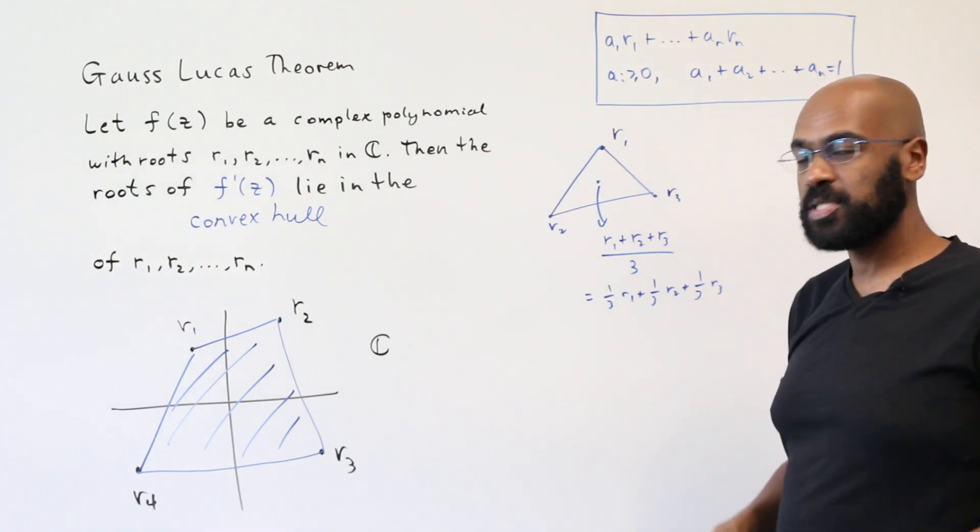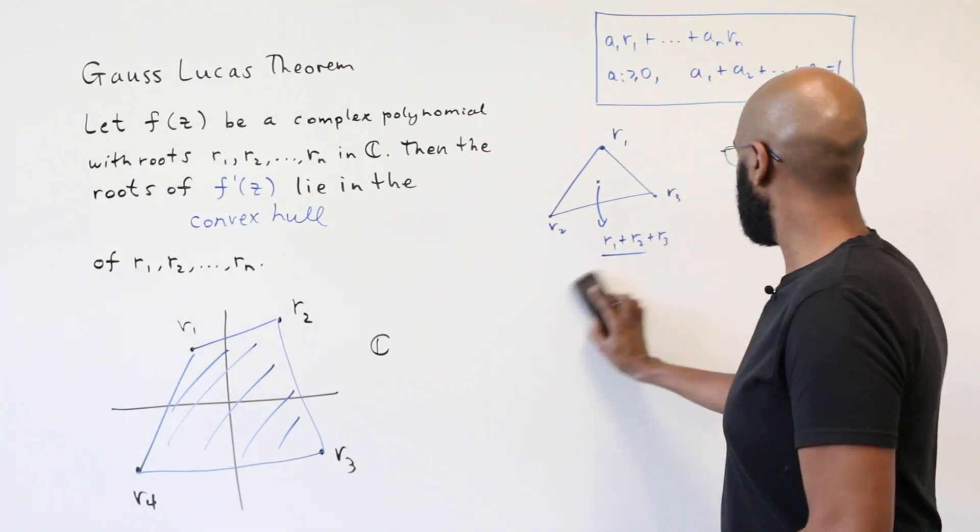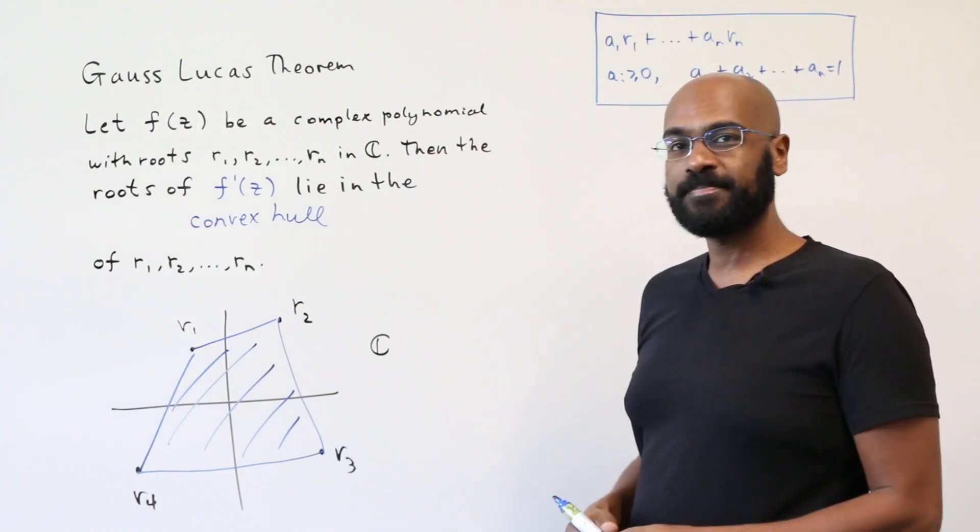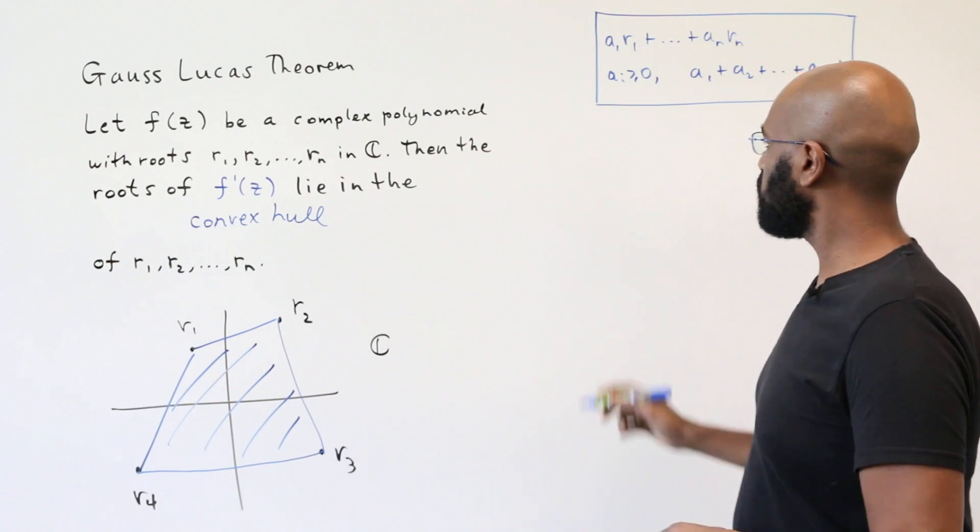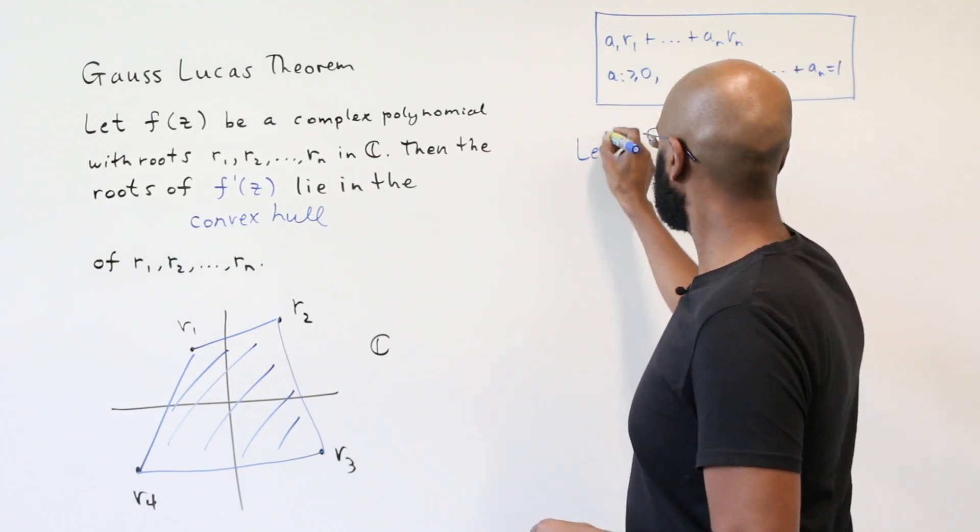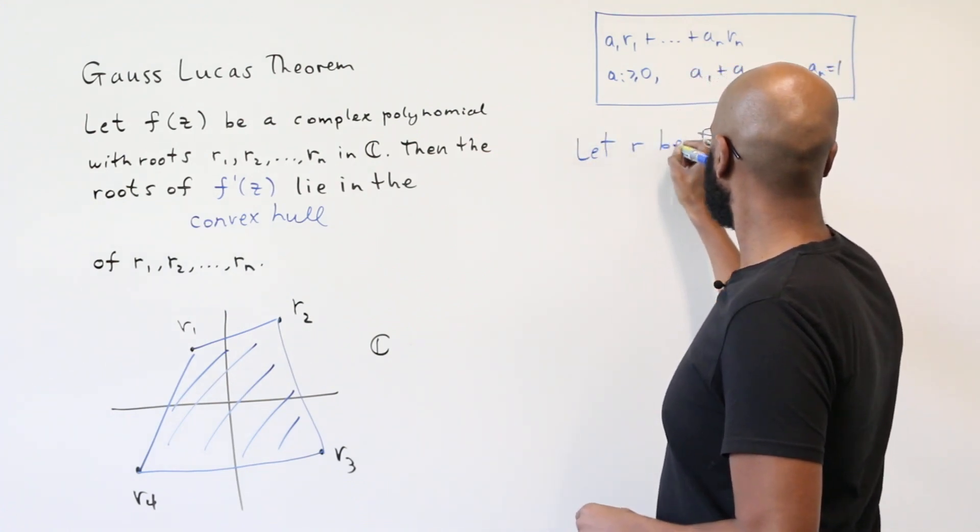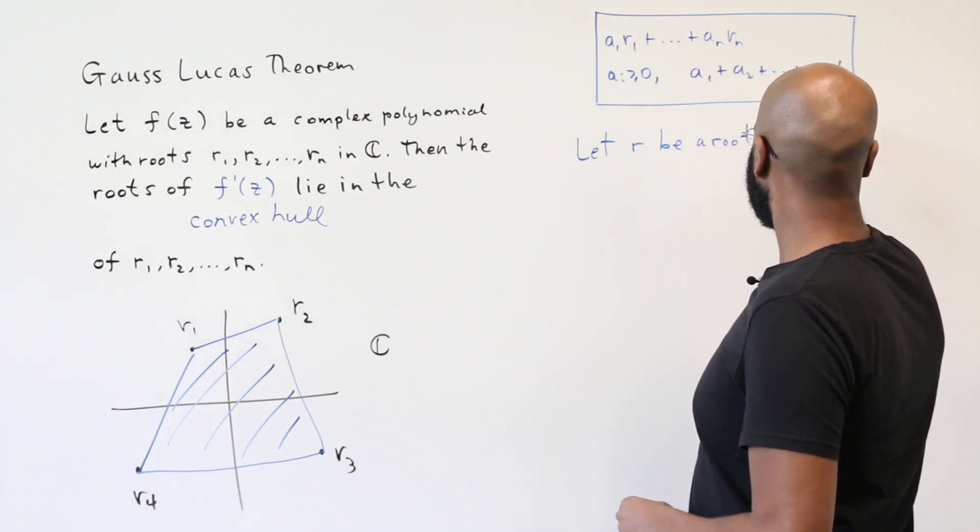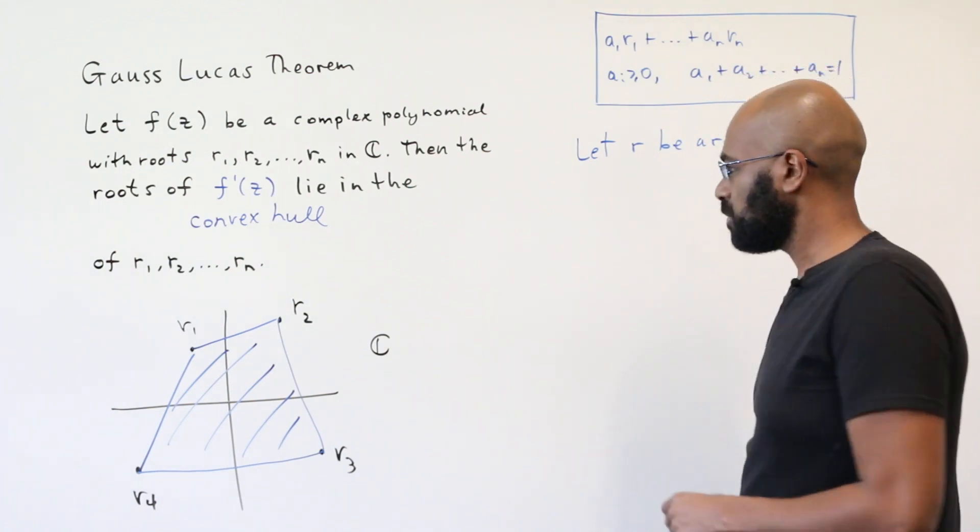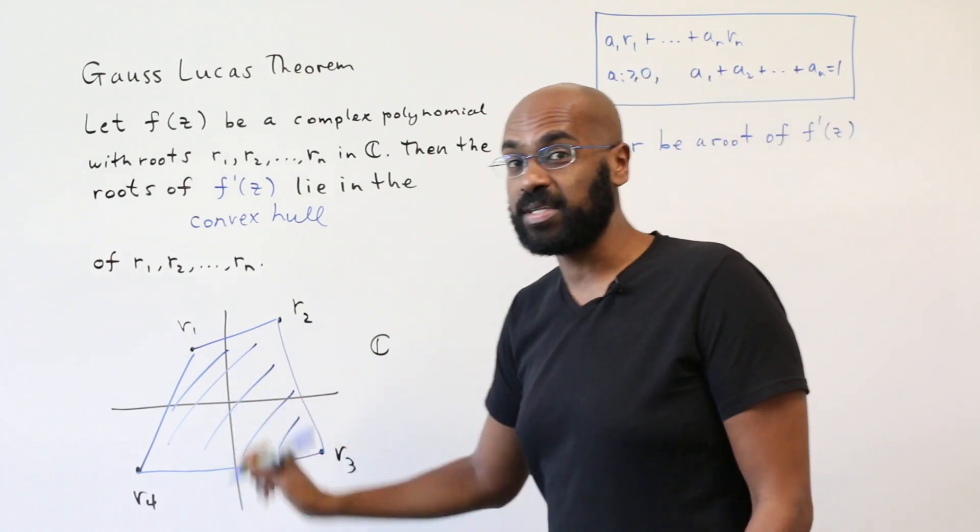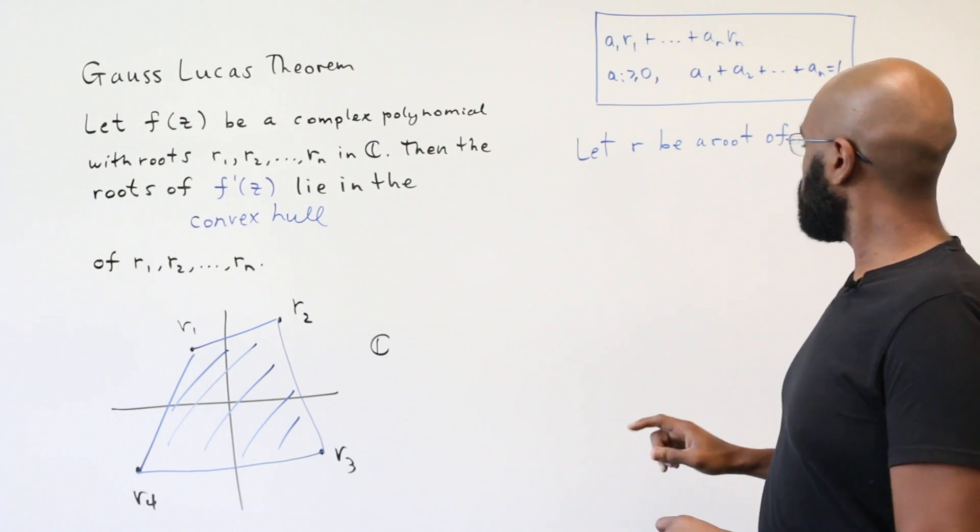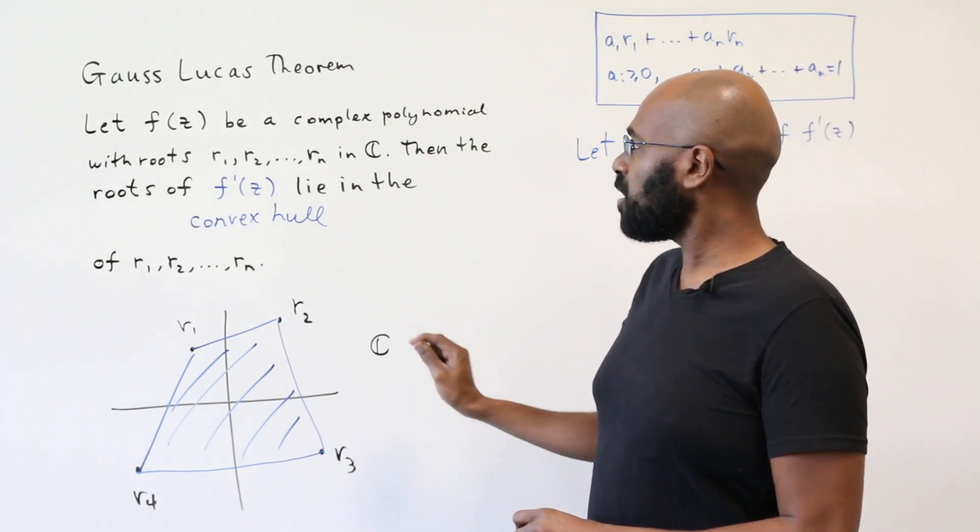Great. So now we can move on to the actual proof of this theorem using that fact. All right. So we'll start off by letting r be a root of the derivative. We're trying to prove r is somewhere in the convex hull of these points r1 through rn. We'll assume also that r is not a root of f.